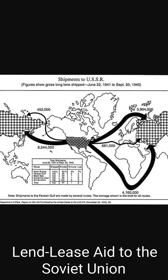The United States supplied the Soviet Union with Lend-Lease materials through three main routes: the Arctic route, the Persian route, and the Pacific route. The Arctic route was done via Arctic convoys and was the shortest and most direct route to the USSR. It sailed across the Atlantic, past Iceland and Britain, as well as German-held Norway. As a result, the Norway factor made it the most dangerous path for transport.